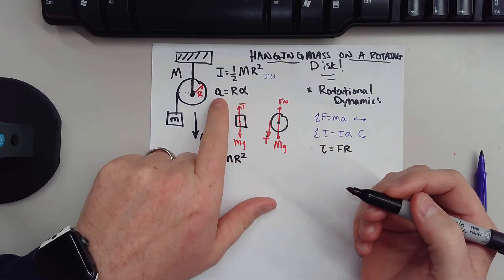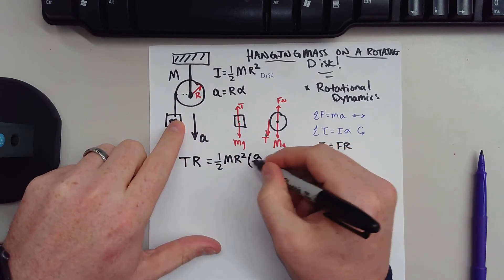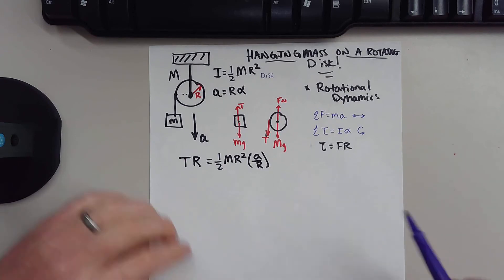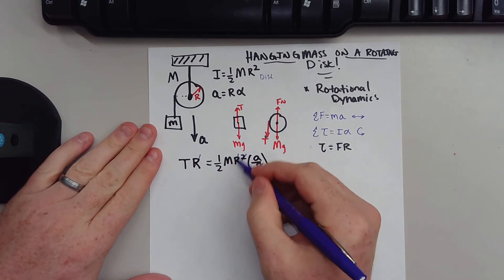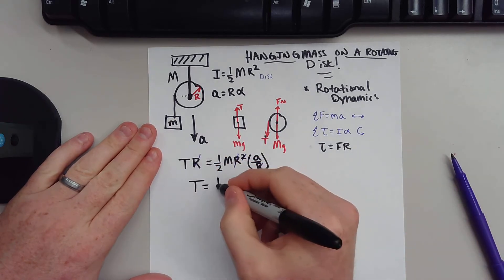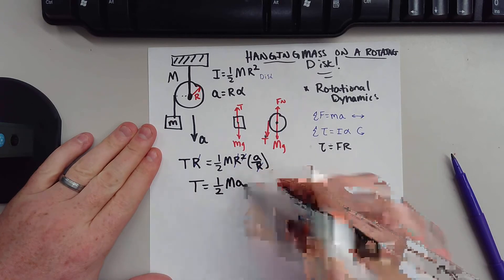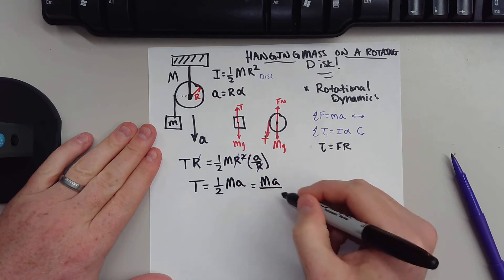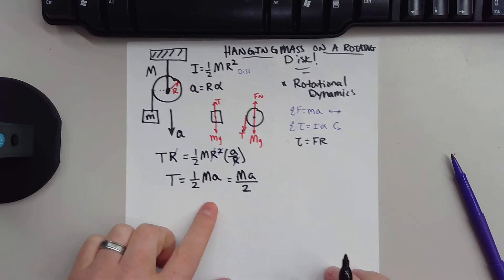Linear acceleration equals R times alpha, so alpha is just A over R. Substituting that in, we can see that a lot of things cancel out: this R cancels out with that one, and then this R cancels out with the other R. So we can derive that tension equals one-half M times A, which simplifies to big M times A all over 2.